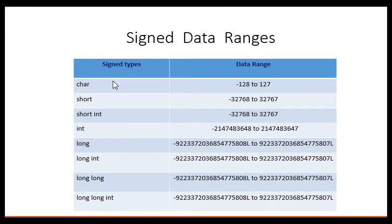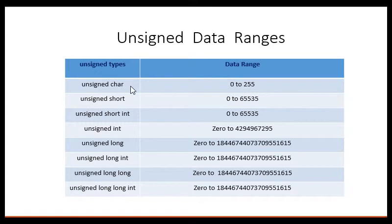We are now going to look into the data range of signed type variables and unsigned variables. If you see here, unsigned char, a data range 0 to 255, unsigned short 0 to 65K. It goes on for each of them and it goes very big.